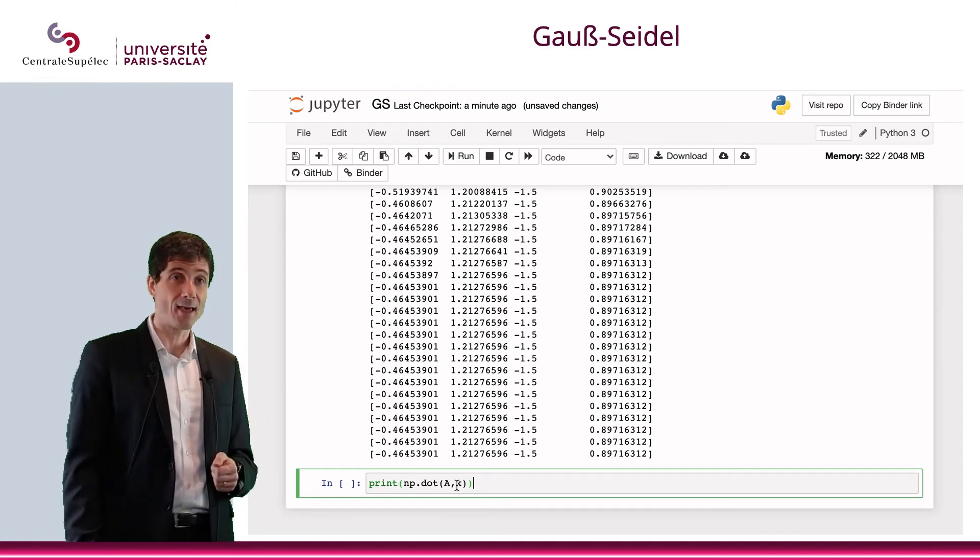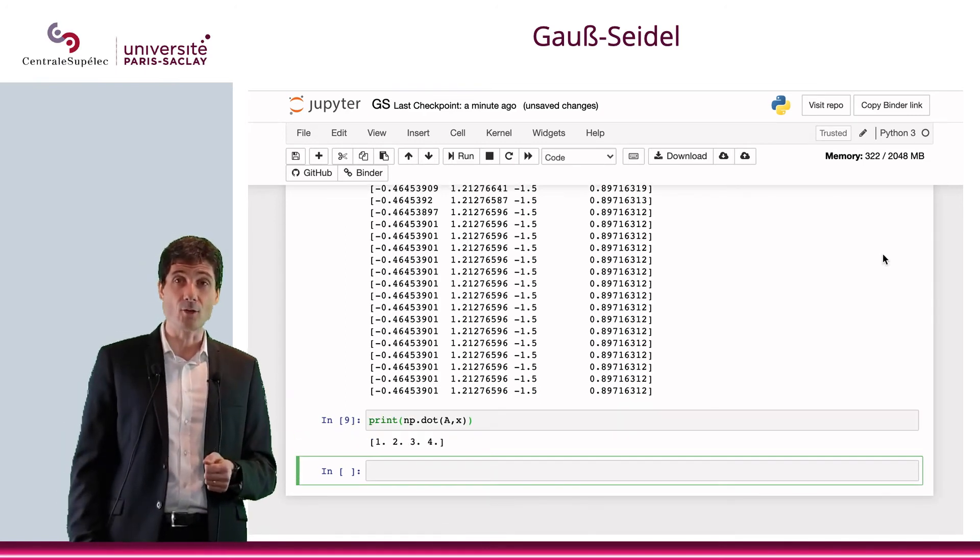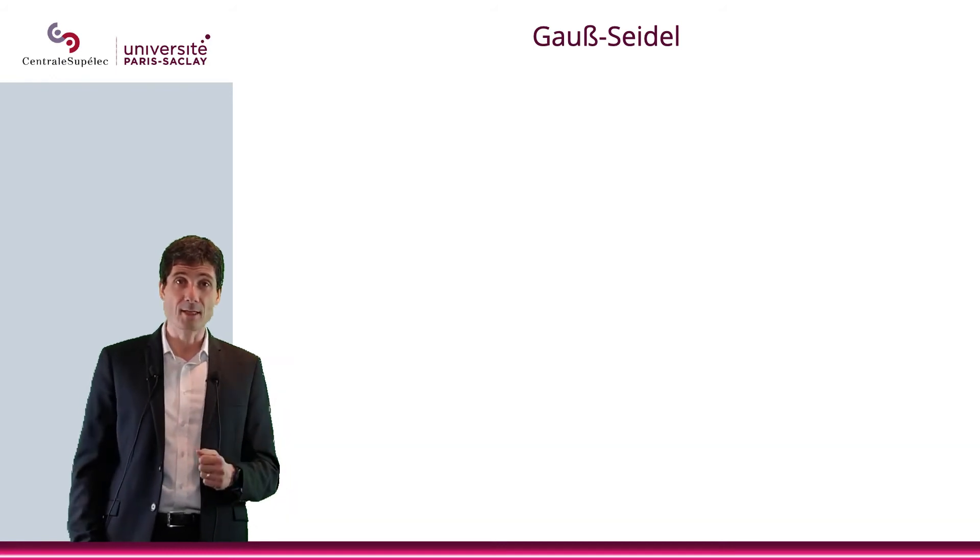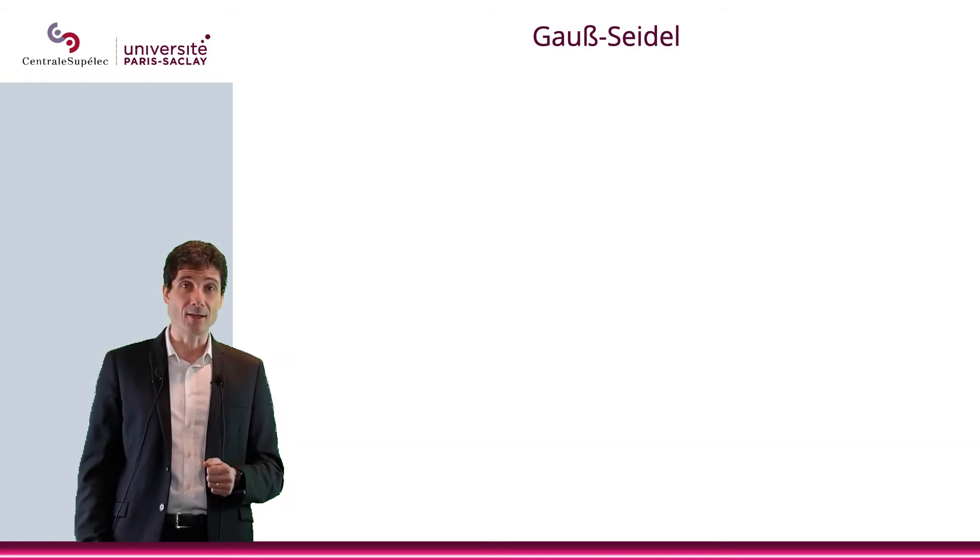And let's verify what happens when I do A, x with the last vector. And I get, indeed, 1, 2, 3, 4. So here is for Gauss-Seidel.